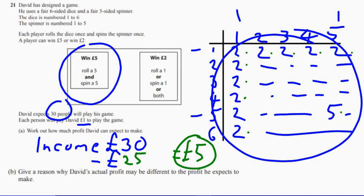Now part B says give a reason why David's actual profit may be different to the profit he expects to make. Well, obviously it might not happen that way. This is what would happen if every outcome happened once. So the simple answer there is not every outcome will happen once.